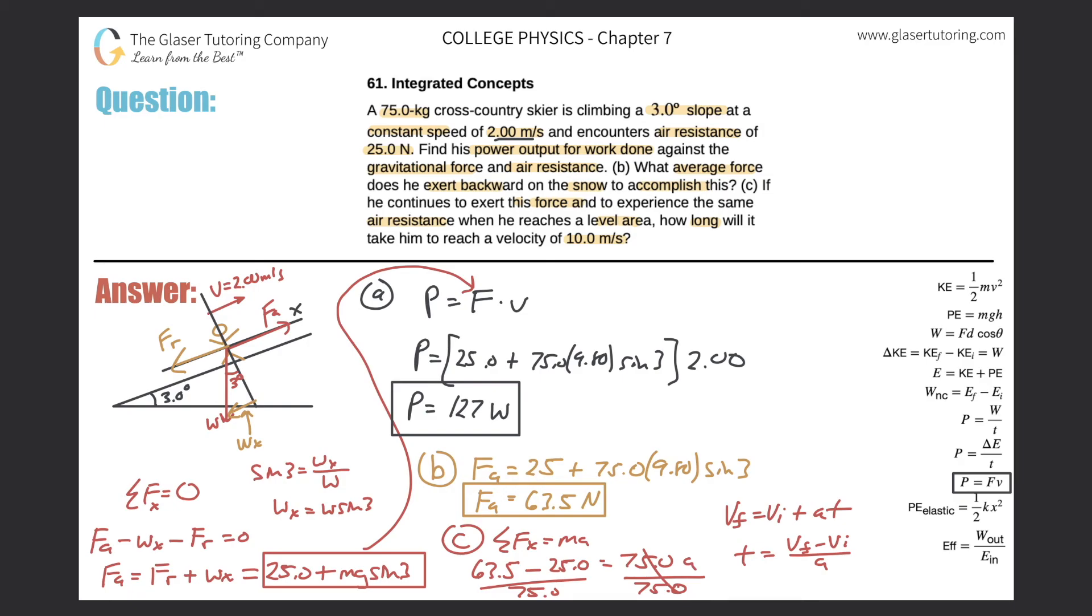So plugging this stuff all in now, let me see if I have enough room. Actually, let me just backtrack. I'm going to try to make this a little smaller. Alright. So I have the time here is going to be equal to the final velocity minus the initial velocity all over A.